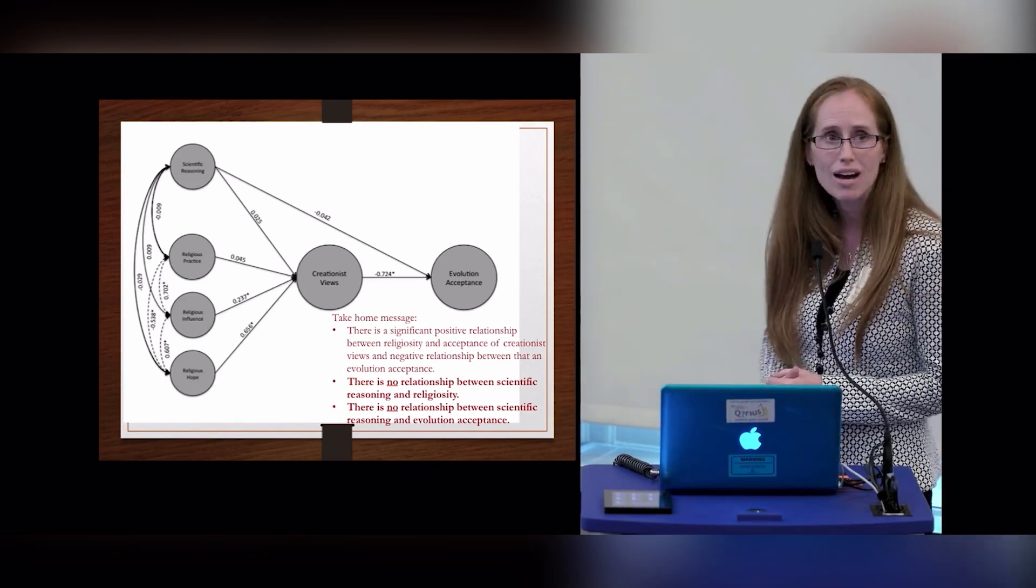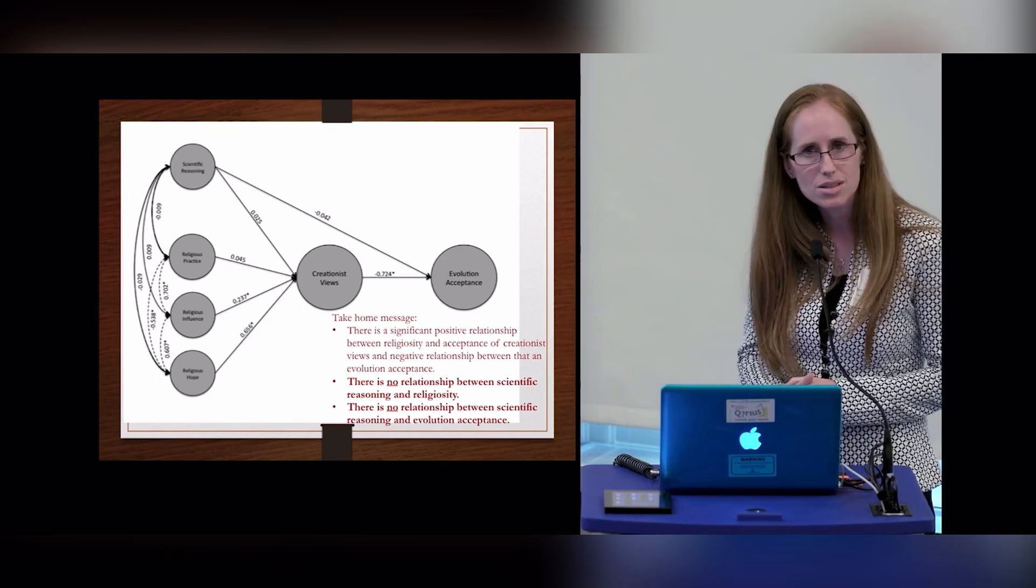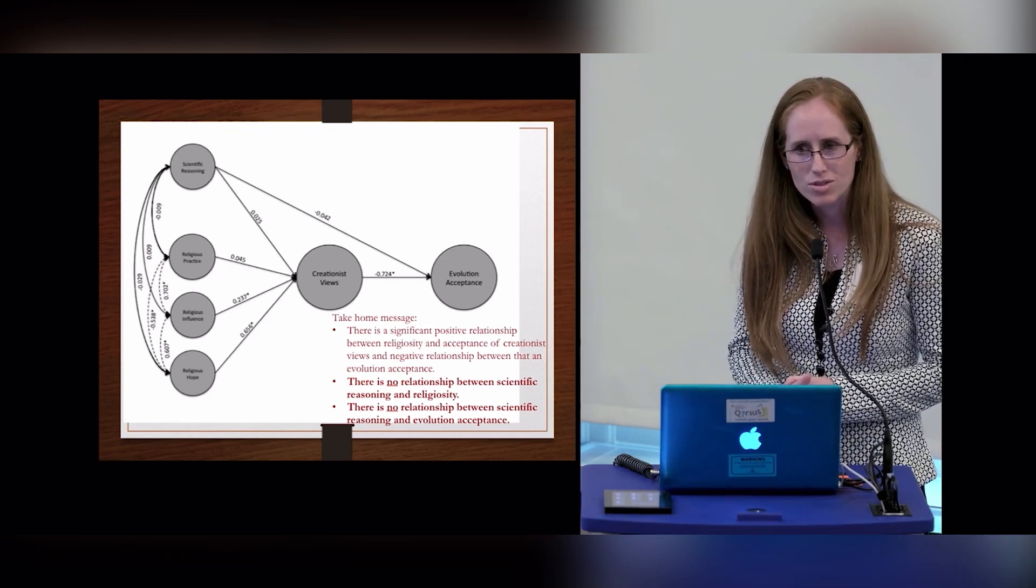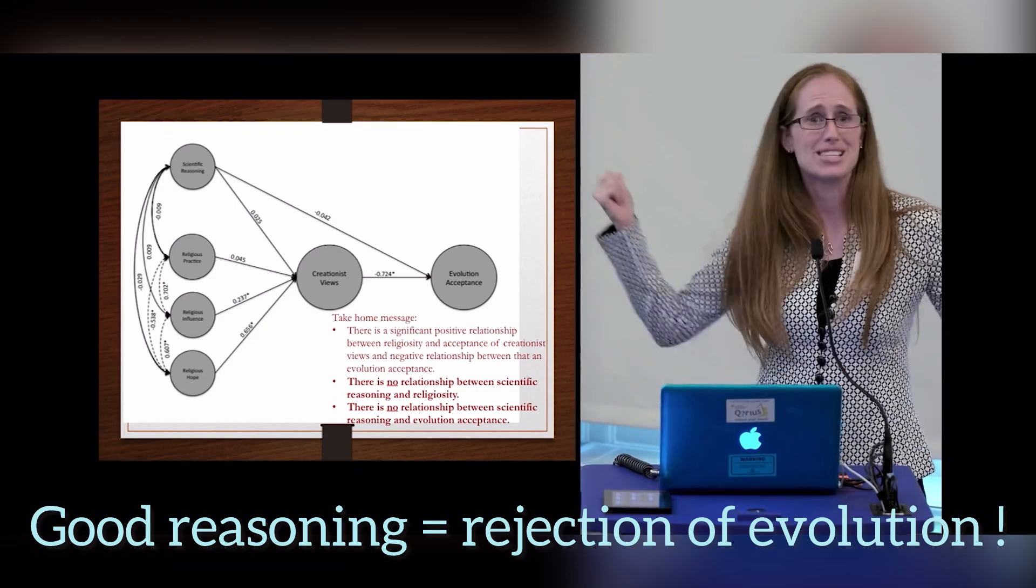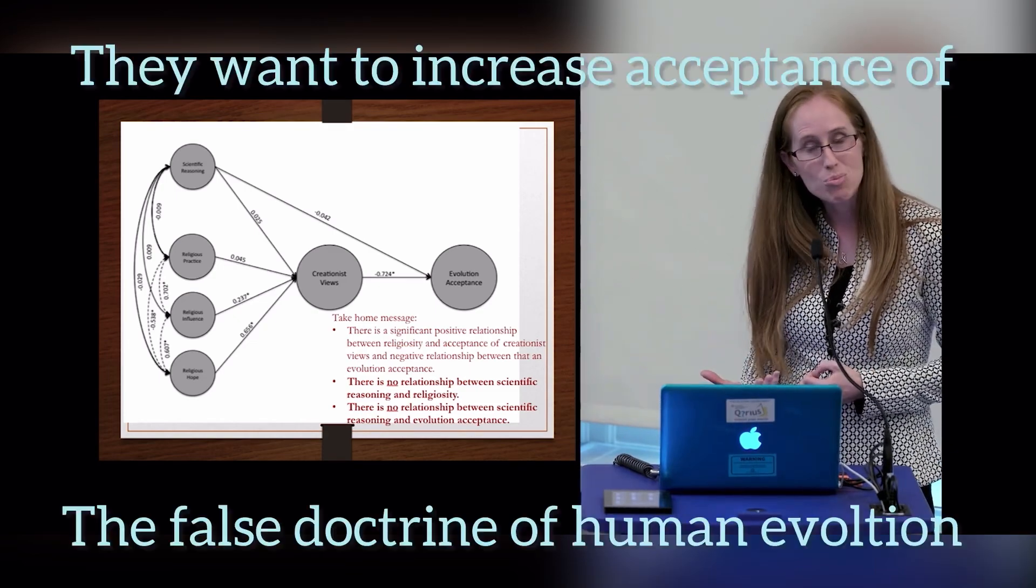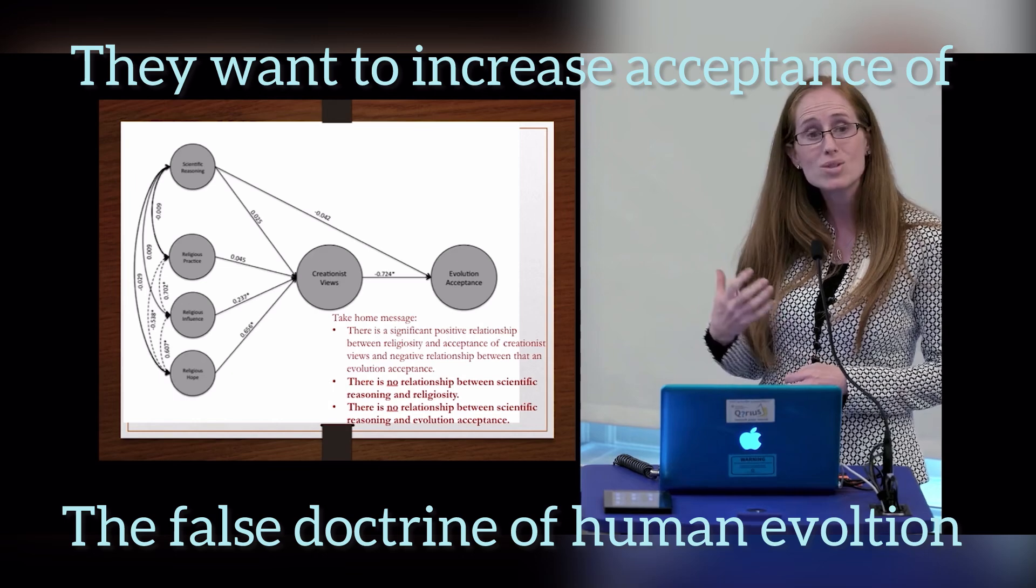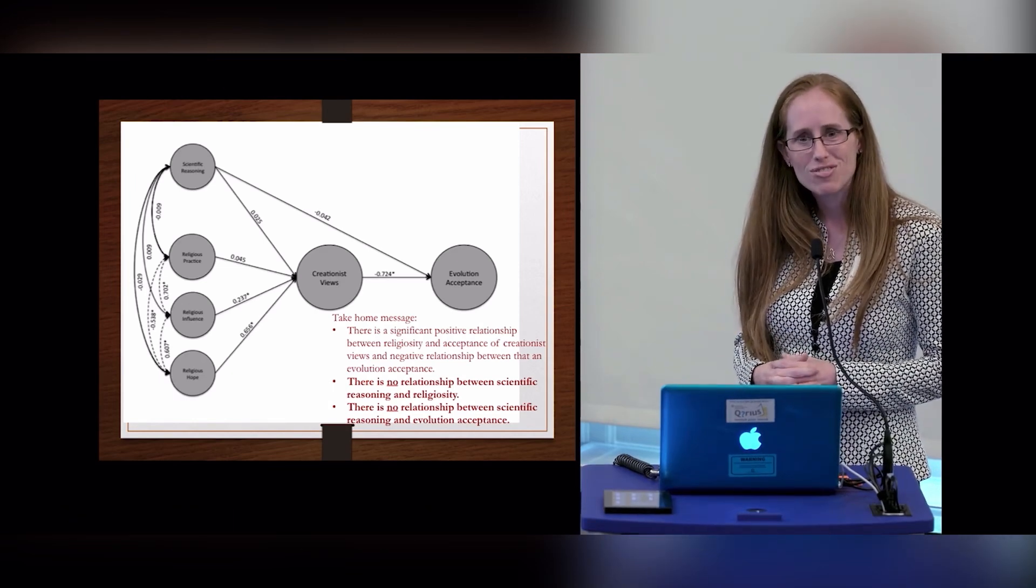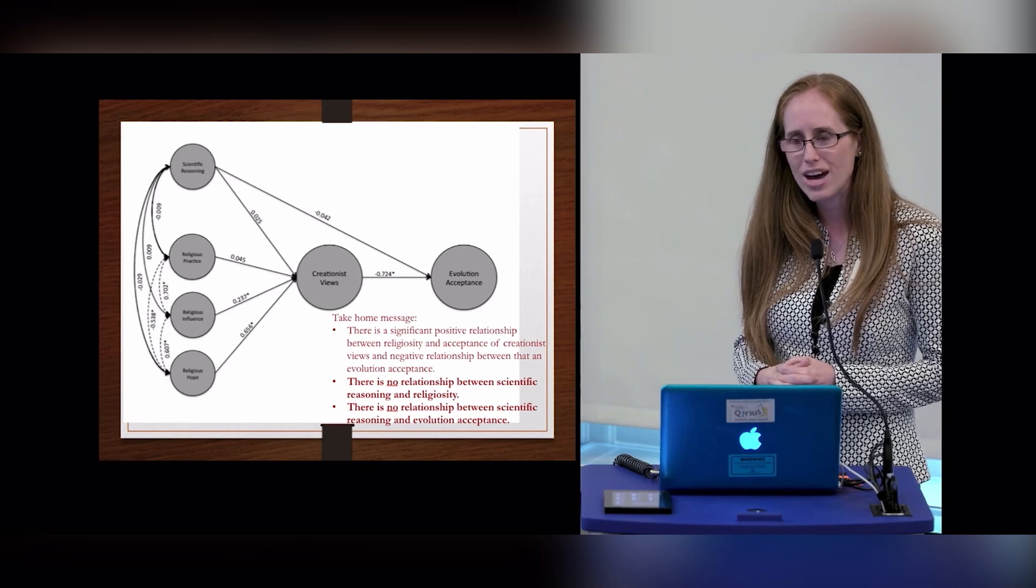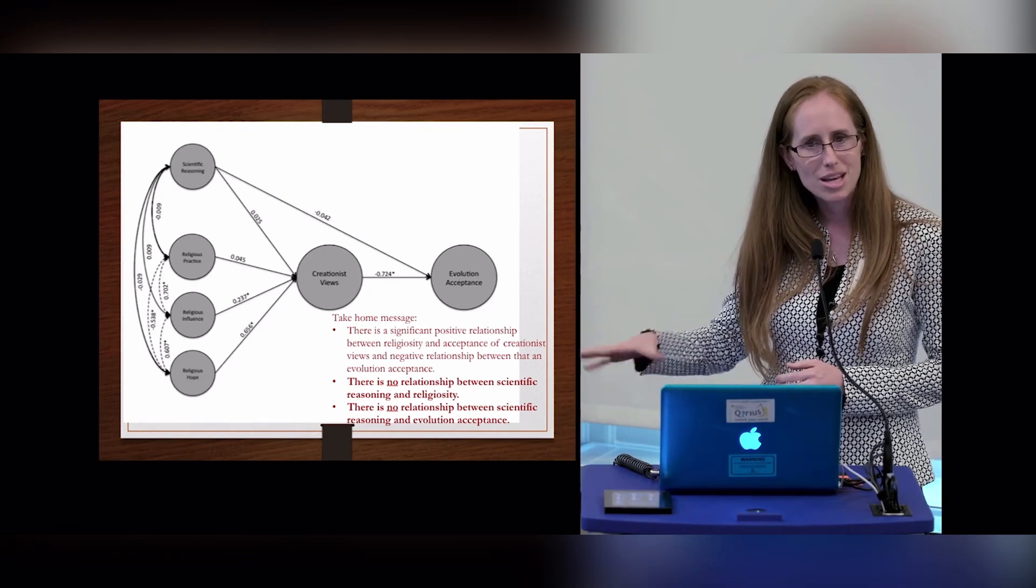What that means is that you can have really great scientific reasoning skills and still outright reject evolution, or you can have really poor scientific reasoning skills and totally accept it as a valid theory. That there is no relationship, which I find encouraging. It goes against a sort of conception in the field among scientists that if I can just get them to think better, they will accept evolution.